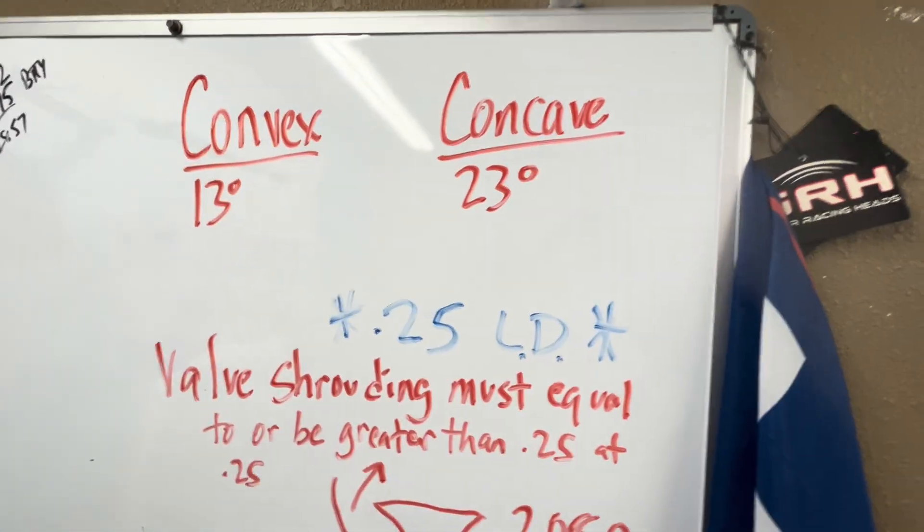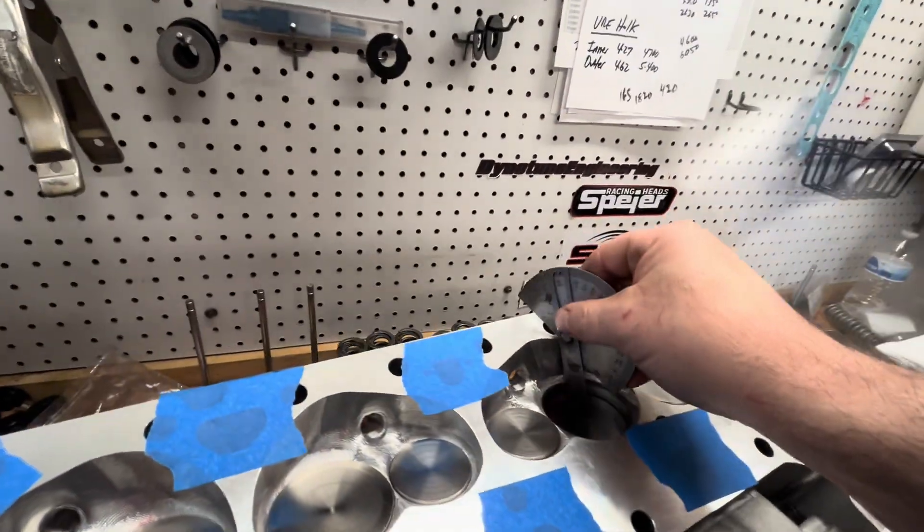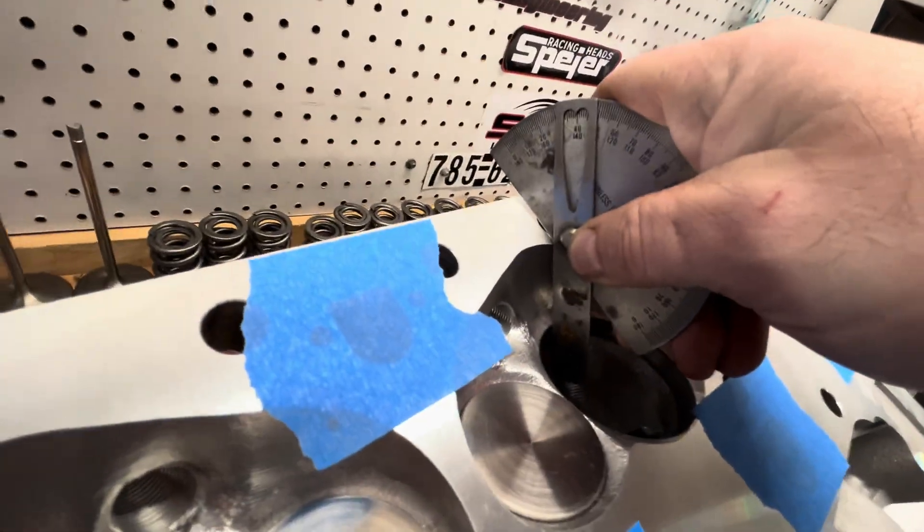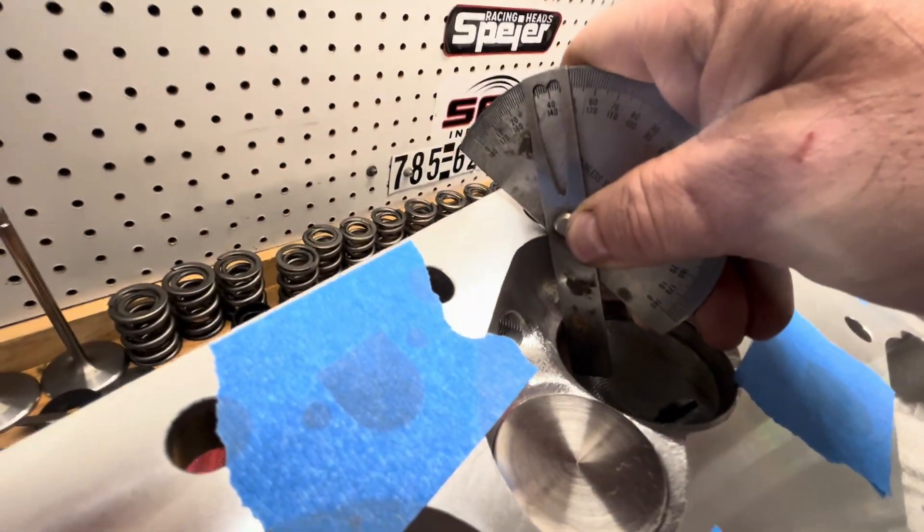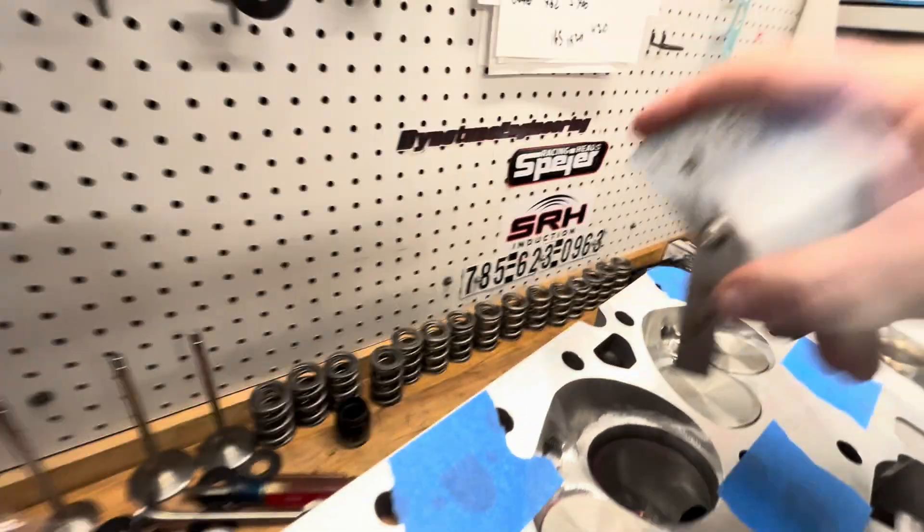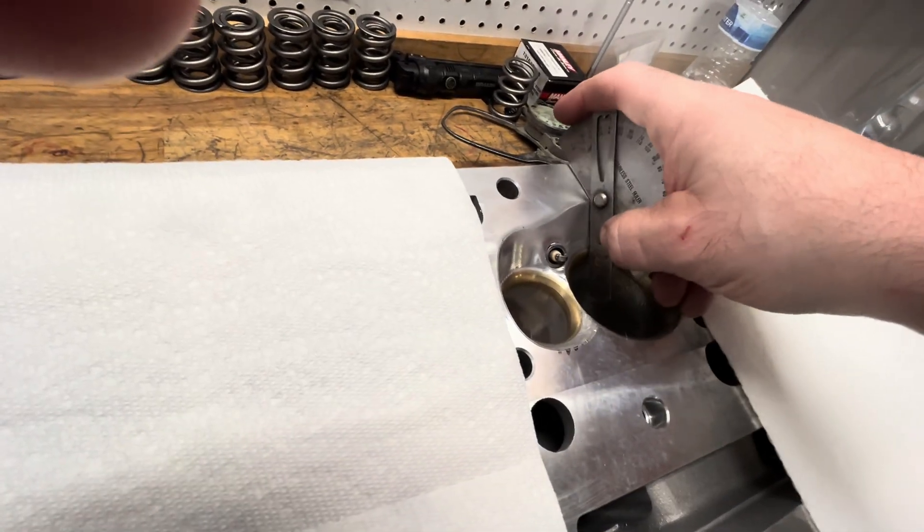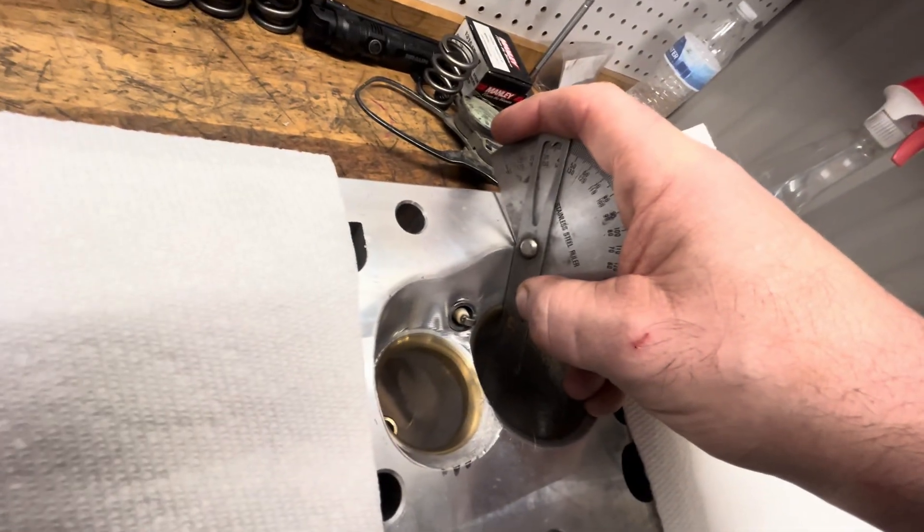So, let me show you the difference in the chambers real quick here. So, this is just your typical 23 degree. So, I lay my angle finder on it and see the big gap. I don't know if you can get to it. See the big gap in between there? Okay, concave. This is a 13 degree profiler. See that? It's straight up from the deck.